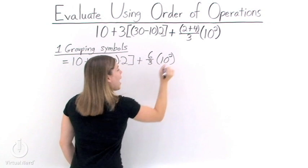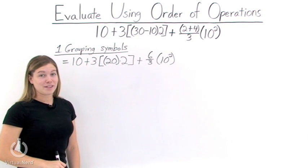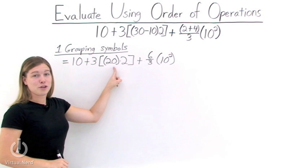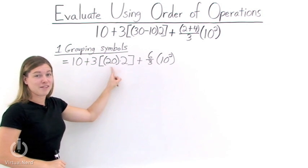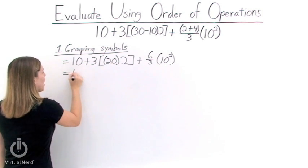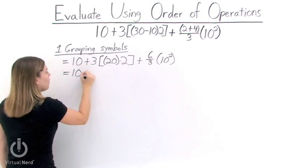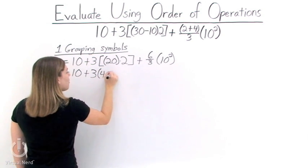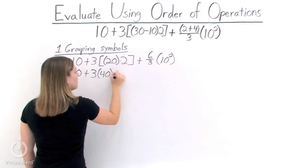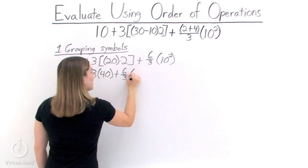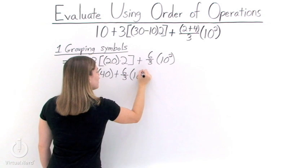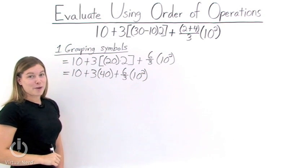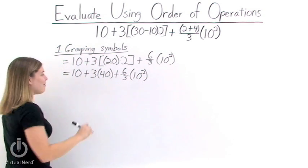Now, have we eliminated all of our grouping symbols? No, we still have to deal with the grouping symbols here, so we need to continue with this step. To do this, we take 20 times 2 and we get 40. Then we just rewrite everything else. Now we've eliminated all of our grouping symbols and we're ready for the next step.